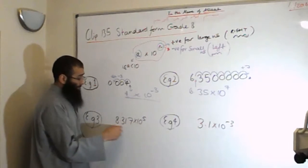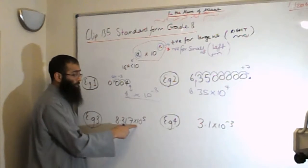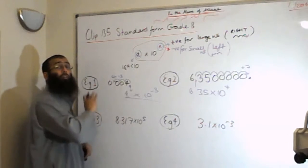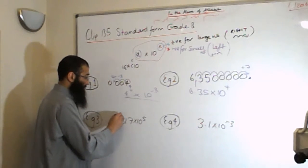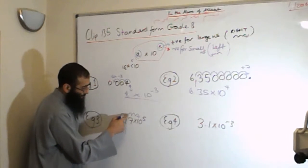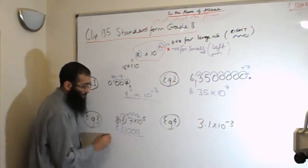So here's the standard form. 8.317 times by 10 to the 5, which means this number multiplied by 10 five times. So we are going to hit the decimal point and move it to the right 5 times. So 1, 2, 3, 4, 5. Copy, copy, copy. We have now 1, 2, 3 empty jumps. 1, 2, 3, and stop.